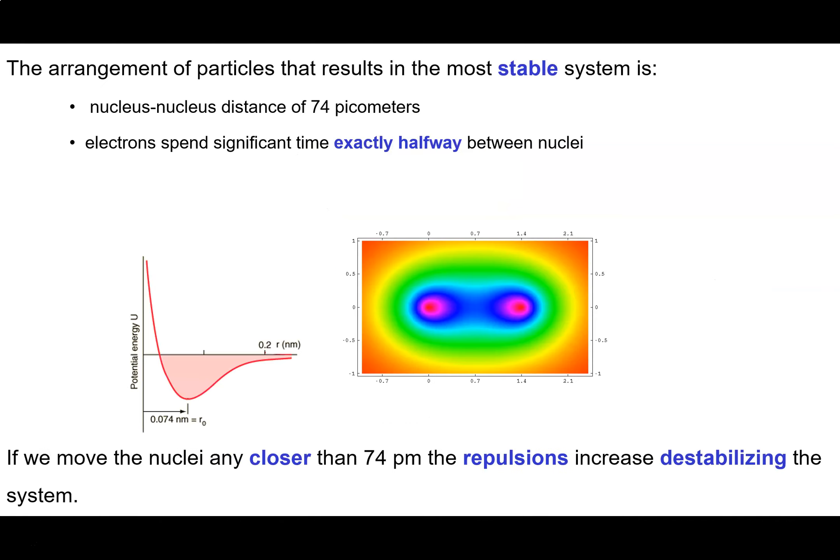So it turns out that there's an ideal arrangement of particles that gives the most stable molecule. And this occurs when there's a distance between the two nuclei of 74 picometers and when the electrons spend most of their time exactly halfway between the two nuclei. So they spend most of their time right in there.